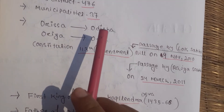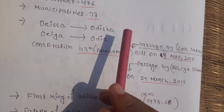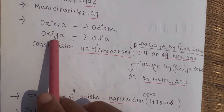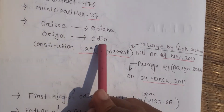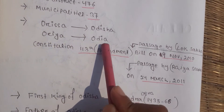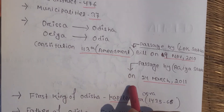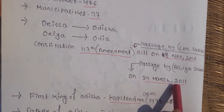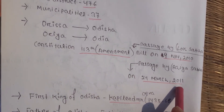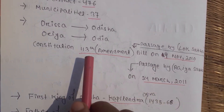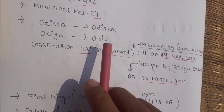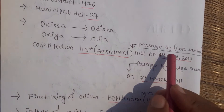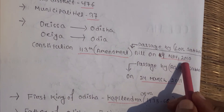The name 'Orissa' was changed to 'Odisha' and 'Oria' was changed to 'Odia' on 24th March 2011. This bill was passed on 9th November 2010.